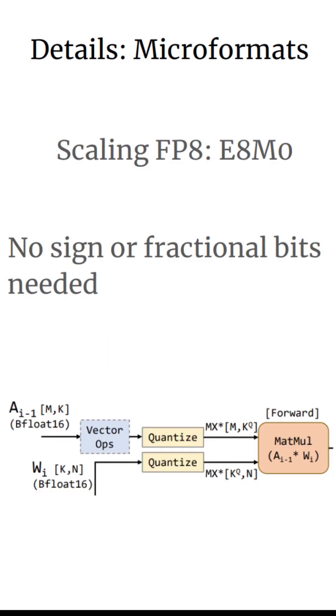When computing things like matrix multiplications, we start with our values in some float16 representation, here in BF16. Right before we do the matrix multiply, we run this quantization, where we convert them down to this smaller format.